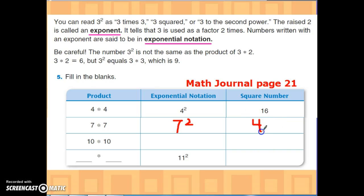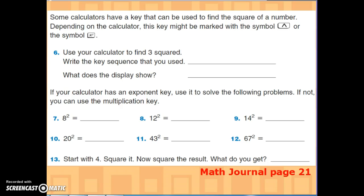All right, then you'll do the same thing for ten times ten. And down here we have our exponential notation: eleven squared. So eleven squared means we're doing what problem? Eleven times eleven. And then you'll need to find the product, which will be your square number. All right, if you continue on on page 21, you're going to do some calculator practice. We're going to look at questions 7 through 12.